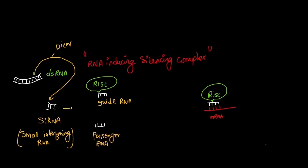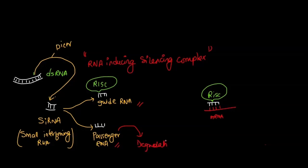Now as soon as this siRNA is formed, it will unwind and form two single-stranded RNAs: one is your passenger RNA and the other one is your guide RNA. This passenger RNA undergoes degradation. But this guide RNA will form a complex with RISC. RISC is a complex of many proteins which can silence a particular mRNA. That is why the full form of RISC is RNA-Induced Silencing Complex.